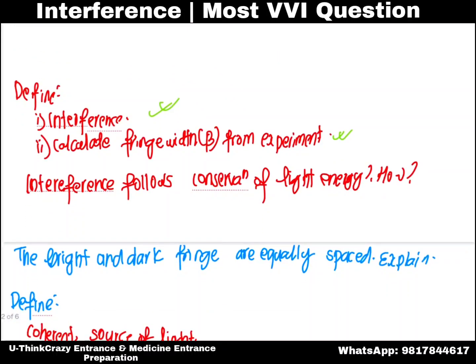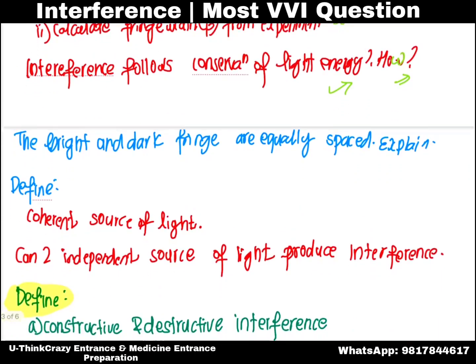Interference follows the conservation of light energy. How does interference follow conservation of light energy? The bright and dark fringes are equally spaced — explain.